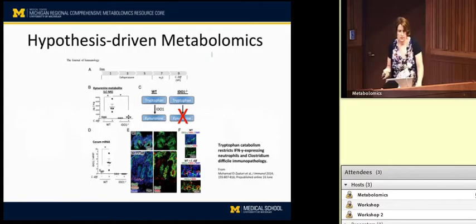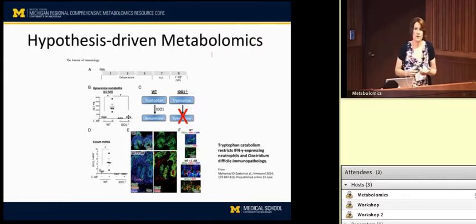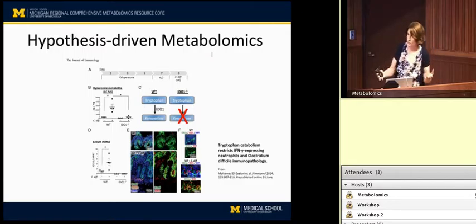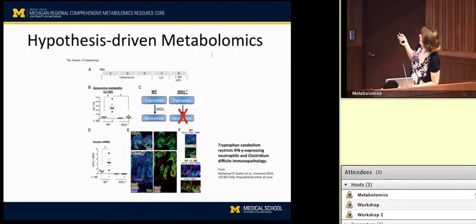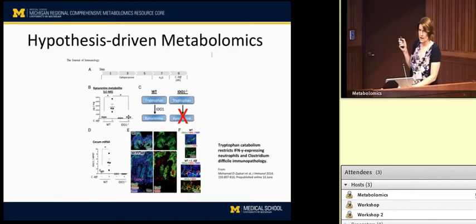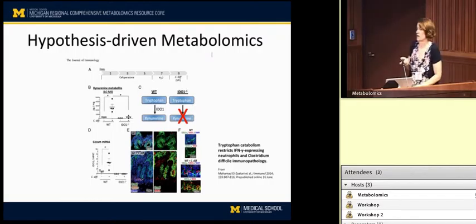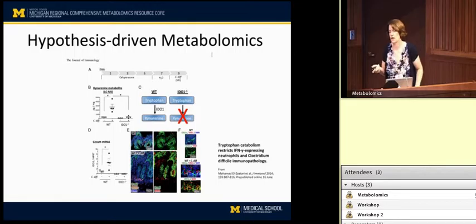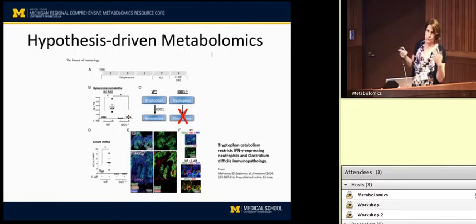I wanted to do a case study on hypothesis-driven metabolomics, which is what we might call targeted metabolomics. You have a hypothesis and you know what you're looking for — you want to find specific metabolites and determine if the core can do this for you. I'll highlight a study from El-Zatari and colleagues here at the University of Michigan. This group had a hypothesis that tryptophan catabolism to kynurenine was important in C. difficile infection, based on previous studies they had done.